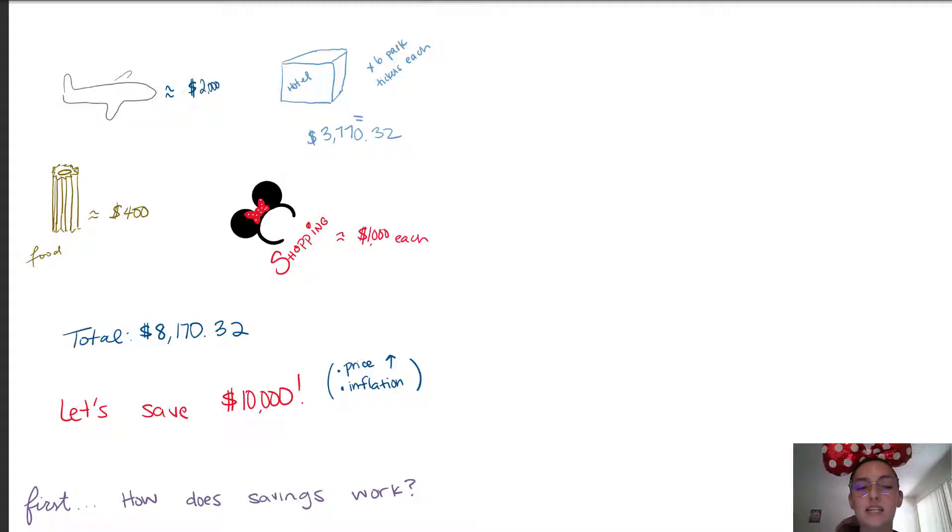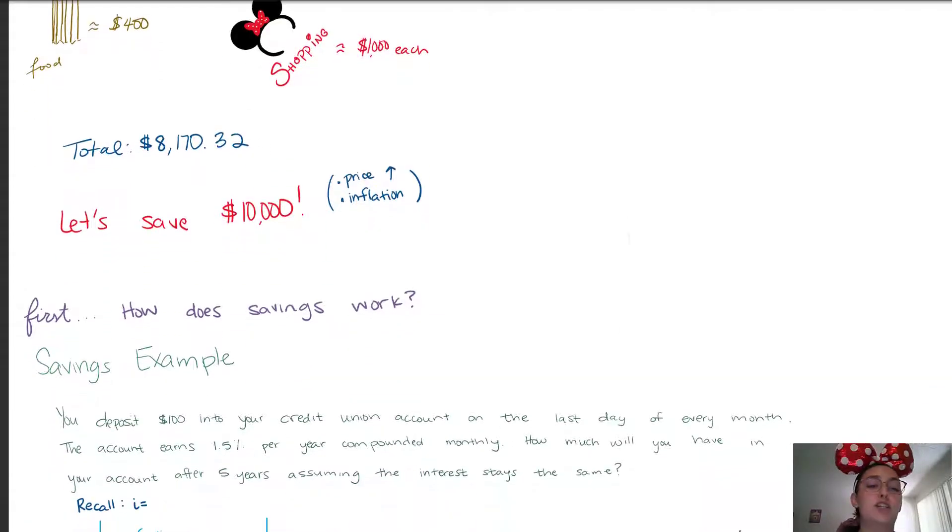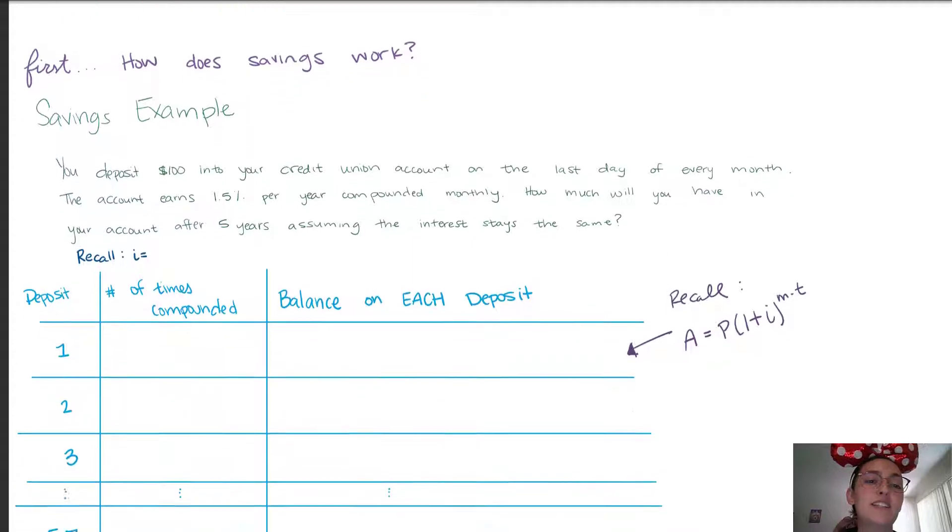In total our trip together would be about eight thousand one hundred seventy dollars and thirty two cents. Now prices are bound to increase, these ears go up like ten dollars every few months, and as we discussed in previous videos inflation for sure guarantees a price increase. So we're going to aim to save up about ten thousand dollars and hopefully that'll be enough.